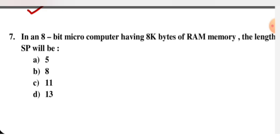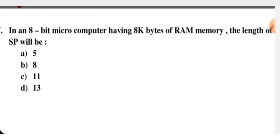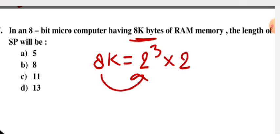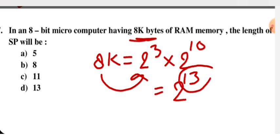Next question: in an 8-bit microcomputer having 8K bytes of RAM memory, what is the length of the stack pointer (SP)? The SP size equals the address size. Converting 8K bytes: 8K = 2^3 × 2^10 = 2^13, so there are 13 address lines. Therefore the length of the SP is 13 bits. Option D is the right answer.